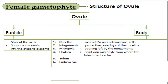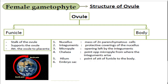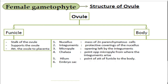The chalaza is the point opposite to the micropyle from where the integuments arise. Just like the south pole is the exact opposite of the north pole, chalaza is exactly opposite to the micropyle. The hilum is the point of attachment of the funicle to the body — that is, the point where the funicle joins the body of the ovule.